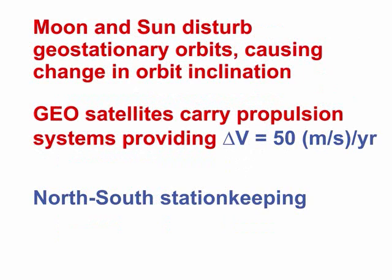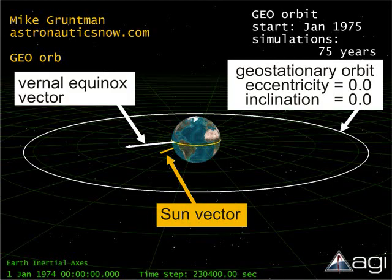Gravitational forces of the Moon and the Sun disturb the geostationary orbit, causing change in its inclination, also known as the north-south drift. To counteract this natural effect, geostationary satellites carry propulsion systems providing velocity increments, or delta-v's, of about 50 meters per second per year in orbit. This satellite function is also referred to as north-south station-keeping. This video illustrates the effects of gravitational forces of the Moon and the Sun on a geostationary satellite.